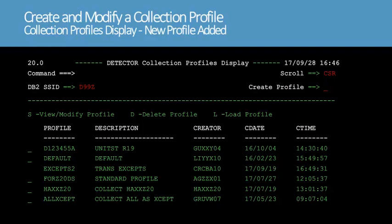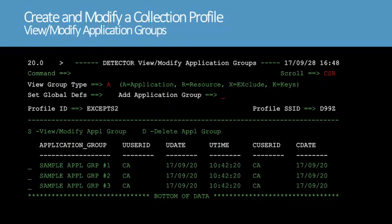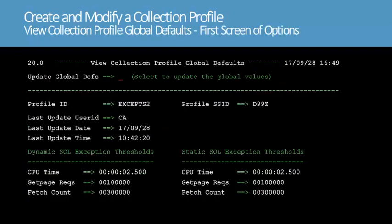Next, we'll show what the profile contains. We'll type S in the line command field for the new profile. The View Modify Application Groups screen shows the sample application groups defined in the profile. The Set Global Defaults option lets you access the global threshold settings for the exceptions. We'll type S in the Set Global Defaults field. The View Collection Profile Global Defaults screen shows the current threshold settings for static and dynamic SQL exceptions. Global settings are in effect when a request does not meet the criteria defined in an application group, or when you have not defined an application group.